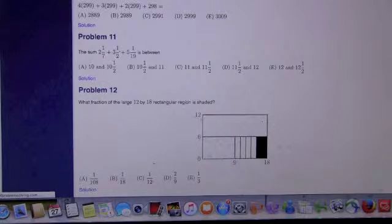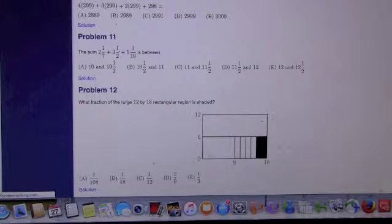Because 1/19 is less than 1/7. Very good. Very good observation. So, it's going to be between 10 1/2 and 11. That's choice B. Okay. Good. Let's look at problem number 12 now.